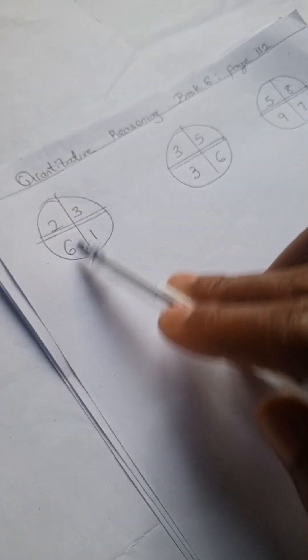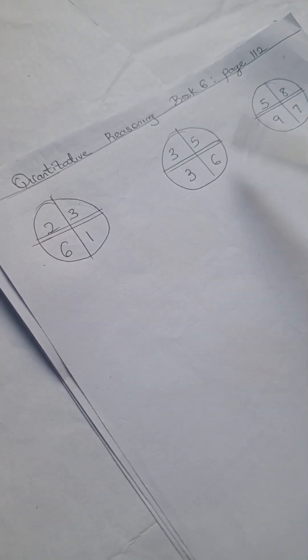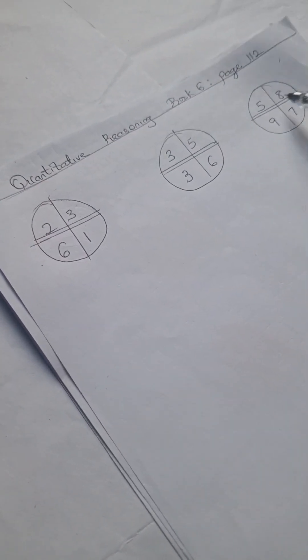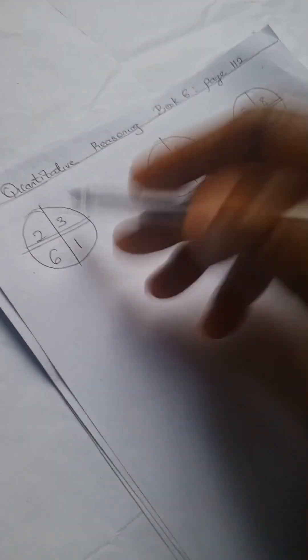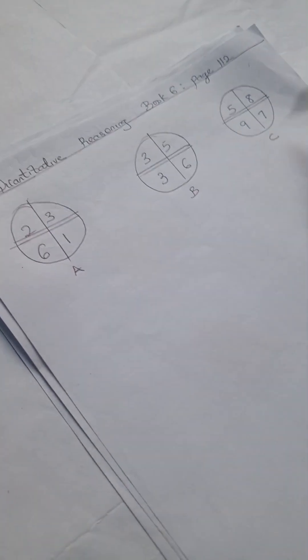So here we have 2, 3, 6, 1 here, 3, 5, 3, 6 here, 5, 8, 9, and 7. Alright, so let's call this shape A, shape B, and shape C. We're going to work through this.